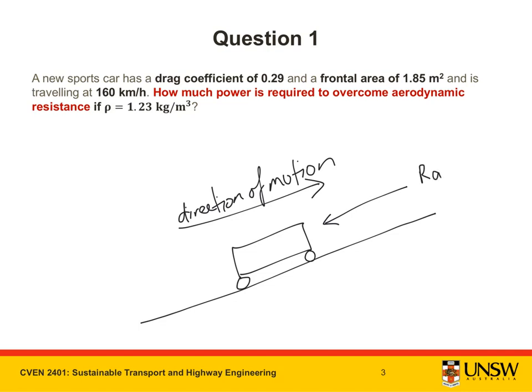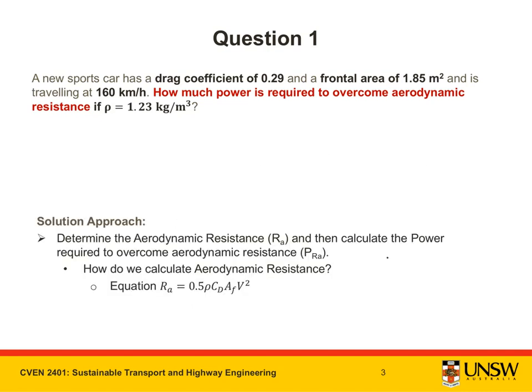We want to know how much power the car must generate in order to overcome aerodynamic resistance. The solution approach will be to first determine the aerodynamic resistance and then use that value to calculate the power required to overcome it. We can utilise the equation for aerodynamic resistance derived in the lecture slides.